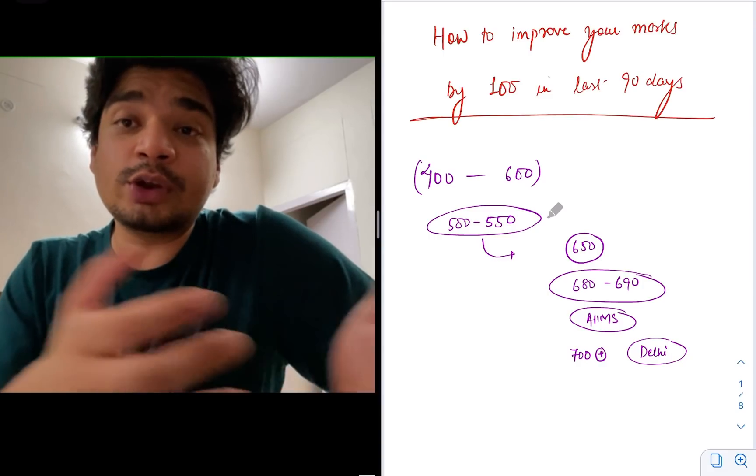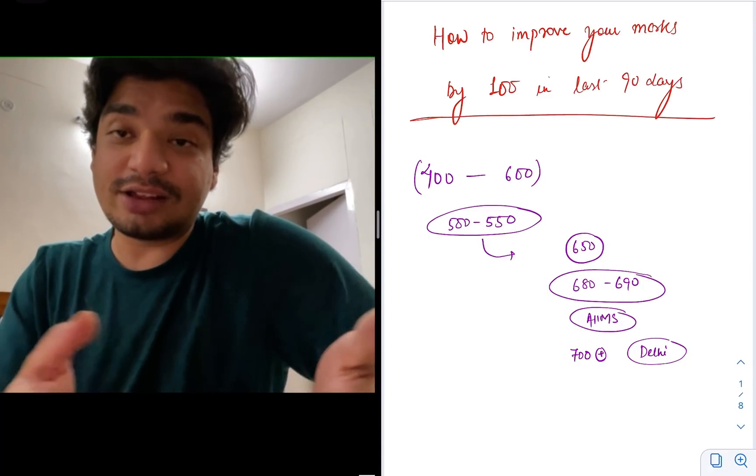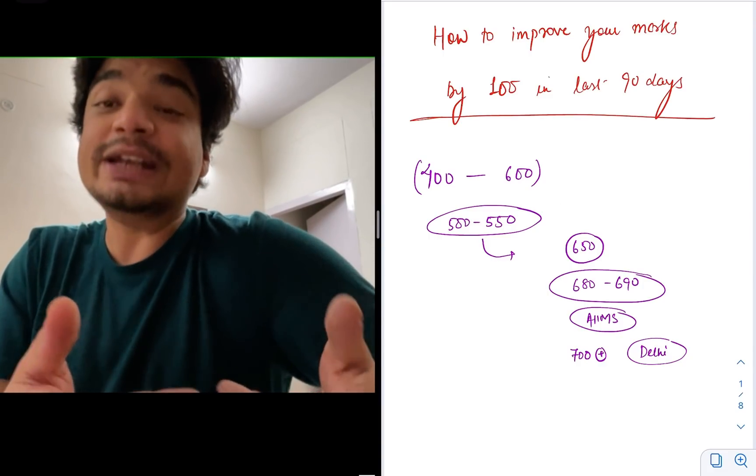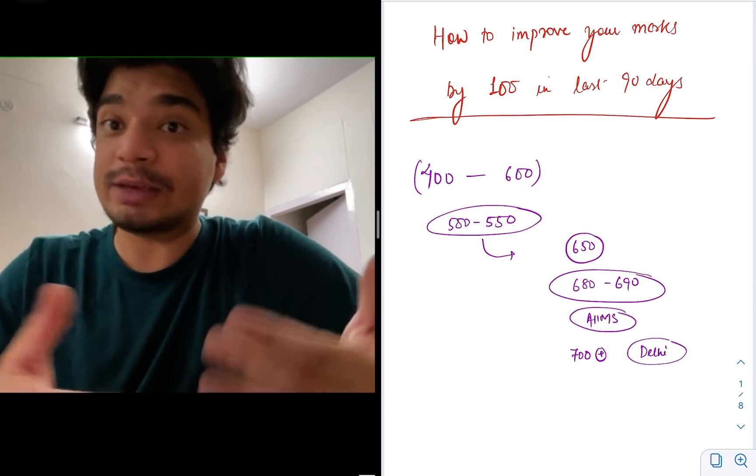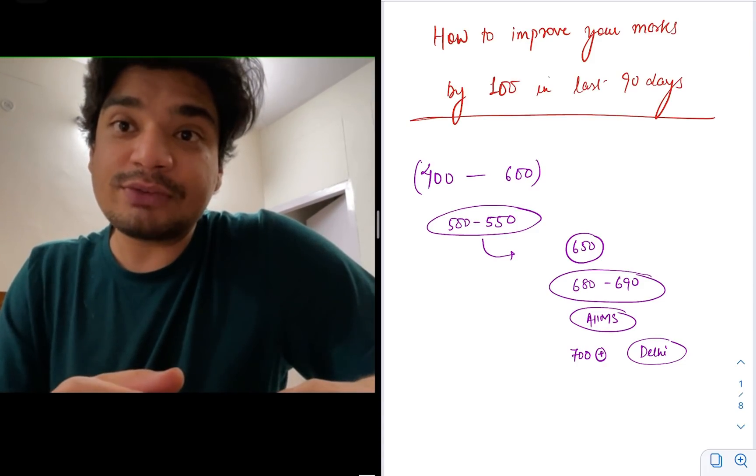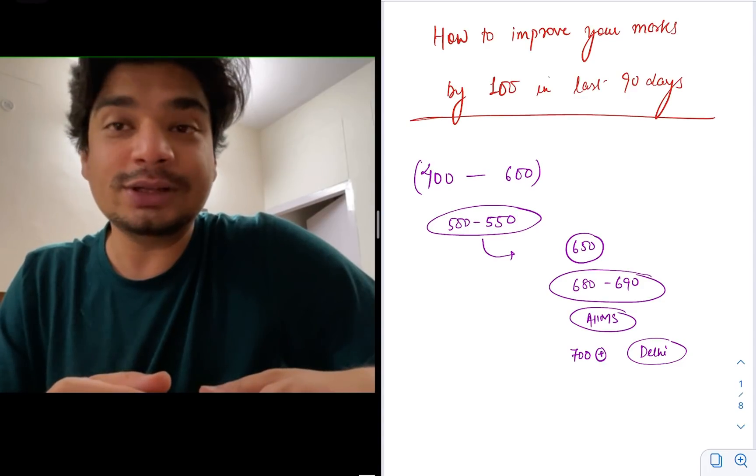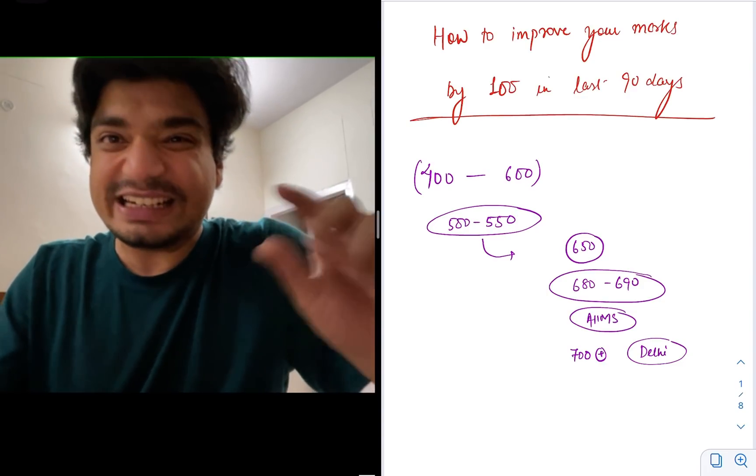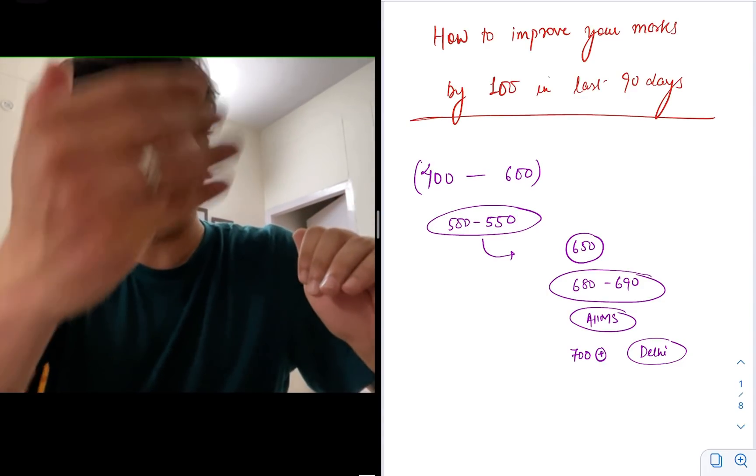So for someone who has gotten 550 last year, he would be hoping to increase it by 120, 130 so that he can get into AIIMS Bhubaneswar, AIIMS Raipur, AIIMS Rishikesh. Or if he can increase by 150 marks, then he would probably get into Delhi. So how do you improve your marks by at least 100? I will start with 100, obviously you can increase more.